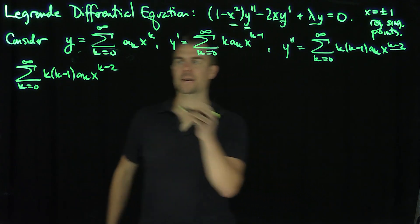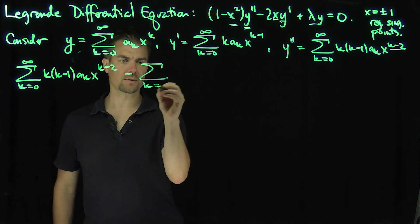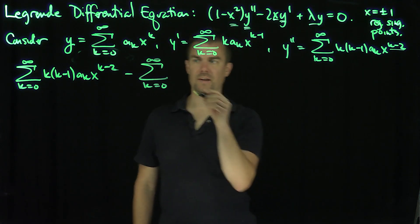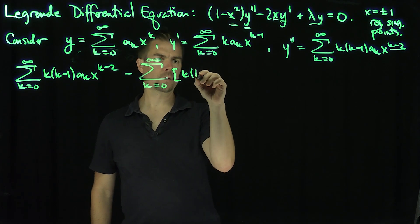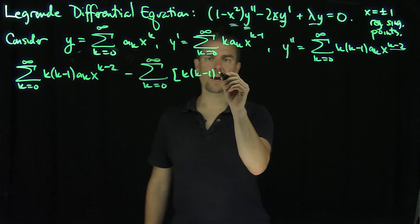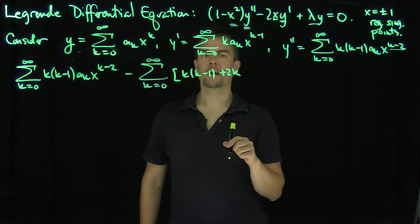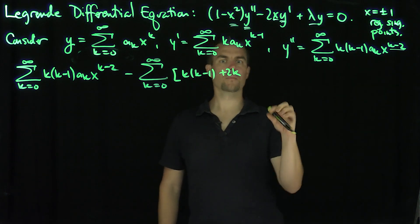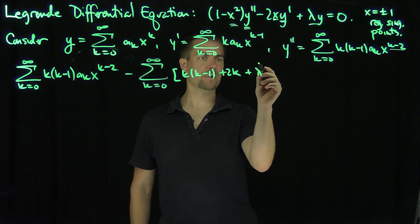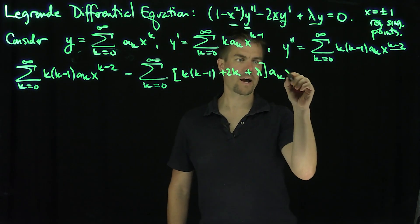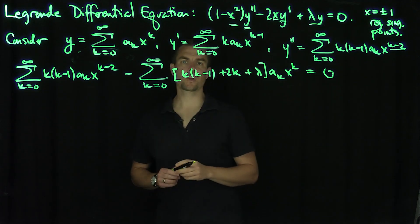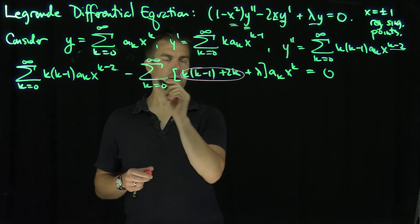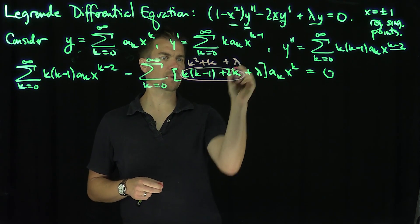Pulling out a negative sign from everything, the x^k terms include: x²·y'' contributing k(k-1), plus 2xy' contributing 2k, plus λ, times a_k·x^k, equals 0. Simplifying, we get k² - k from the first part, and k² + k + λ combined, which factors as k(k+1) + λ.